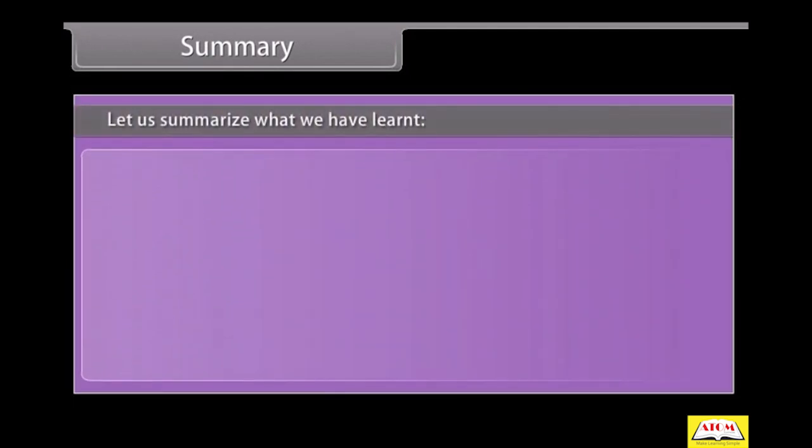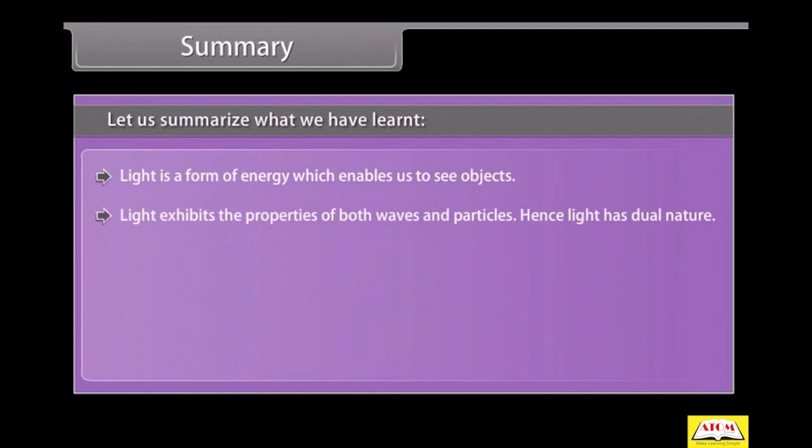Summary. Let us summarize what you have learned. Light is a form of energy which enables us to see the objects. Light exhibits the properties of both waves and particles.